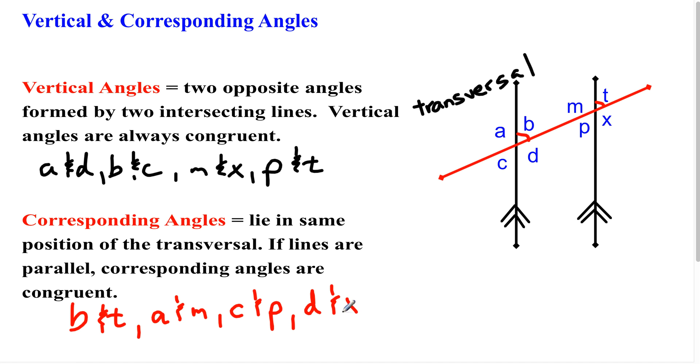So therefore, we have four sets of corresponding angles. And as long as those lines are parallel here, and we go ahead and compare where they are in relation to the transversal, those angles will be congruent or equal in measure.